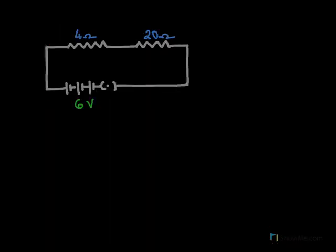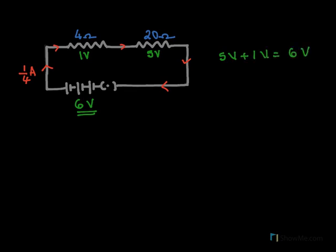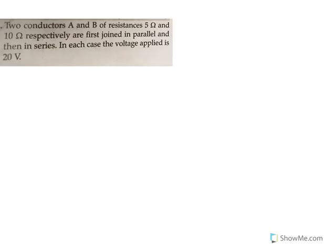To review: the current flowing in this circuit was 1/4 ampere, the same current flowing through both resistances because they are connected in series. The total battery voltage was 6 volts. The potential difference across 4 ohms was 1 volt and across 20 ohms was 5 volts. Notice that 5 volts plus 1 volt equals 6 volts — in a series circuit, the total voltage V equals V1 plus V2.